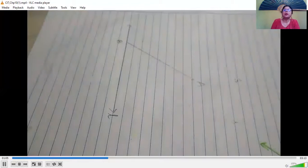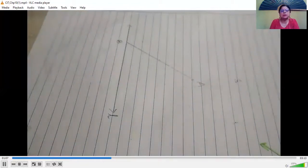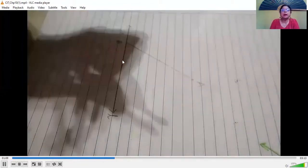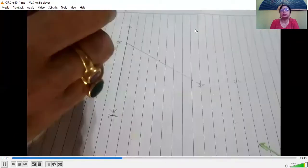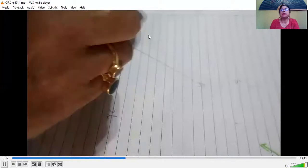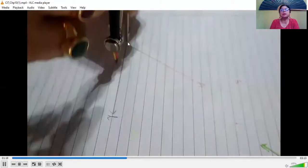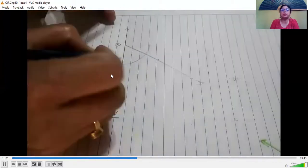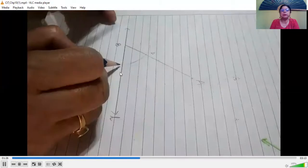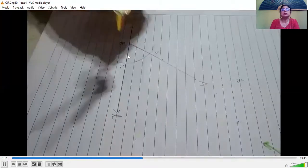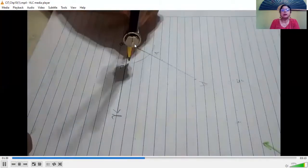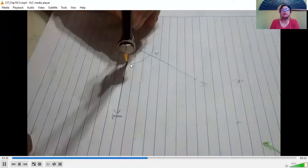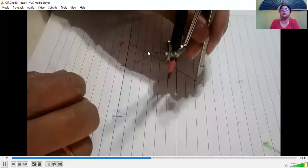Next, we take a compass and with the opening of the compass, this is called the radius. So with a convenient radius and the pointer on B, we draw an arc. Can you see we draw an arc? The arc cuts the line L at point C and line AB at point D.